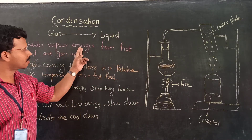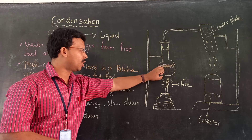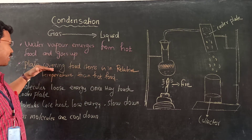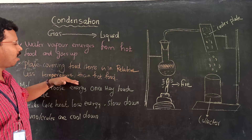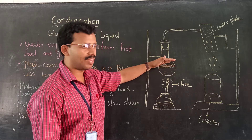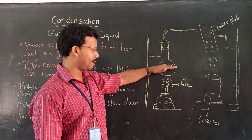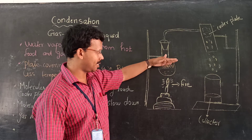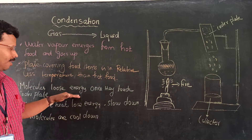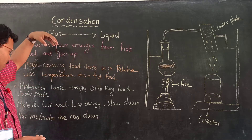Water vapor emerges and comes into contact with a plate at a lower temperature than the hot vapor. The molecules lose energy once they touch the cooler plate, and the gas molecules touch the cooler plate.